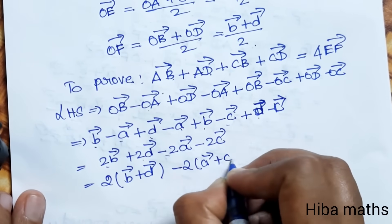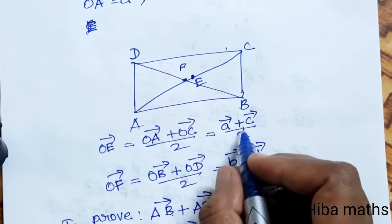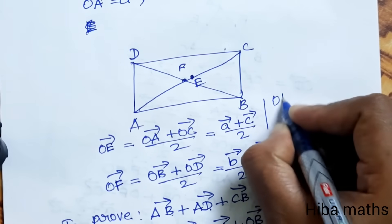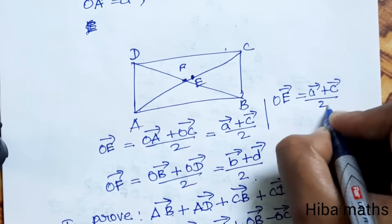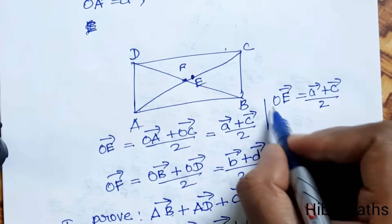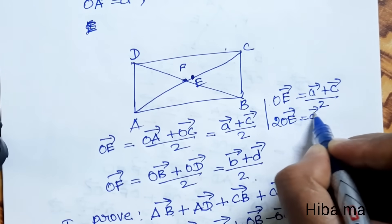Taking 2 common, we get 2 times B vector plus D vector minus 2 times A vector plus C vector. From our midpoint formula, OE vector equals A vector plus C vector divided by 2.